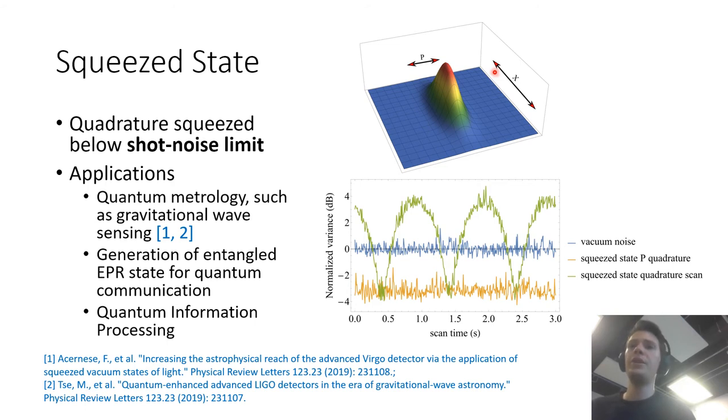And these states have many applications. The most successful one might be in quantum metrology so they can be used for example for gravitational wave sensing and they have been used for that. They're also used in communication protocols like QKD by generating entangled EPR states and they can be used as well for quantum information processing.